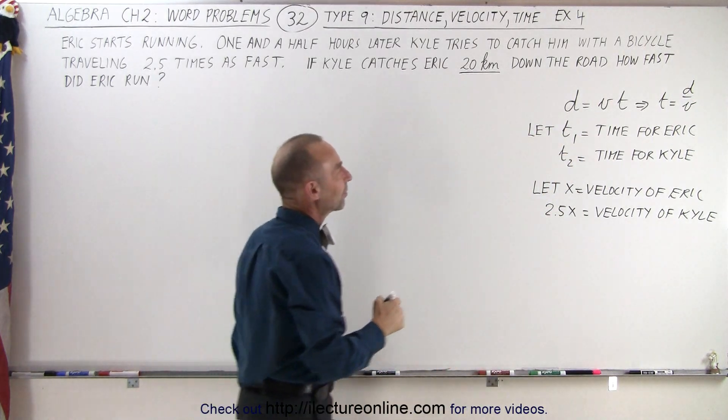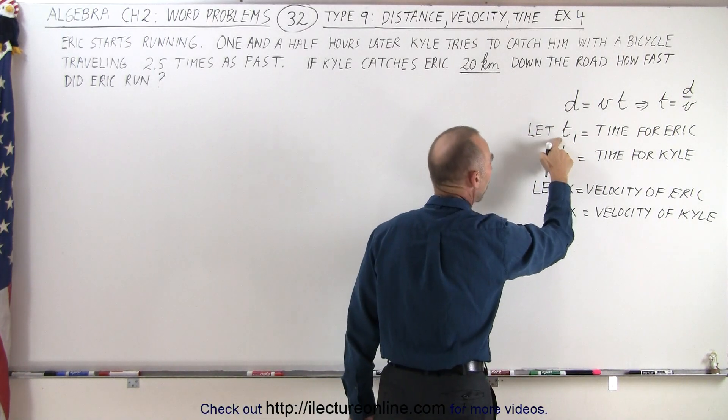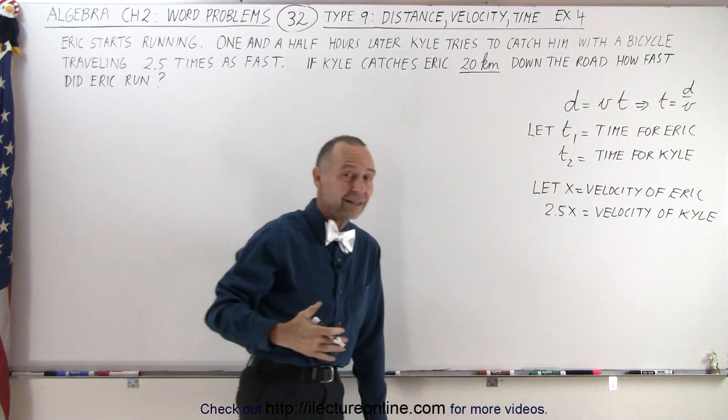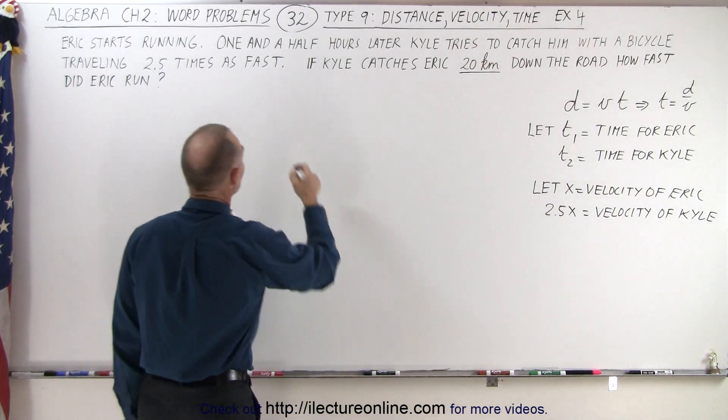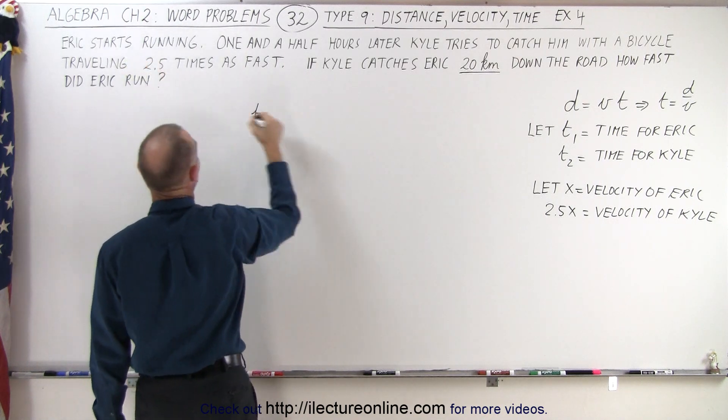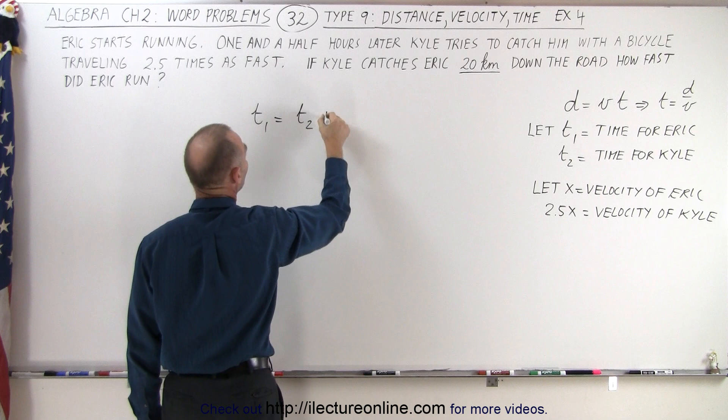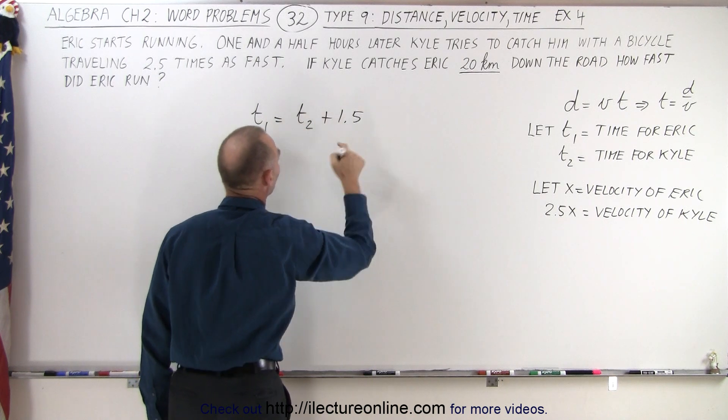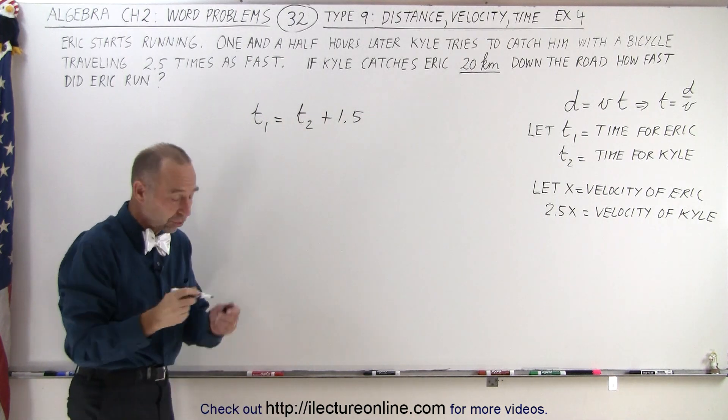So now we also know that the time for Eric is longer than the time for Kyle, because Kyle left an hour and a half later. So we can say that time 1, the time for Eric the runner, is equal to the time for Kyle plus 1.5. Now notice here why this equation is correct.